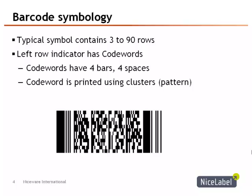The start and the stop character help scanners and software decode the pattern. The left row indicator comes right after the start character. The left row indicator has codewords, which is a group of bars and spaces that represent numbers, letters, and symbols. A codeword might include a row number or the error correction rate.